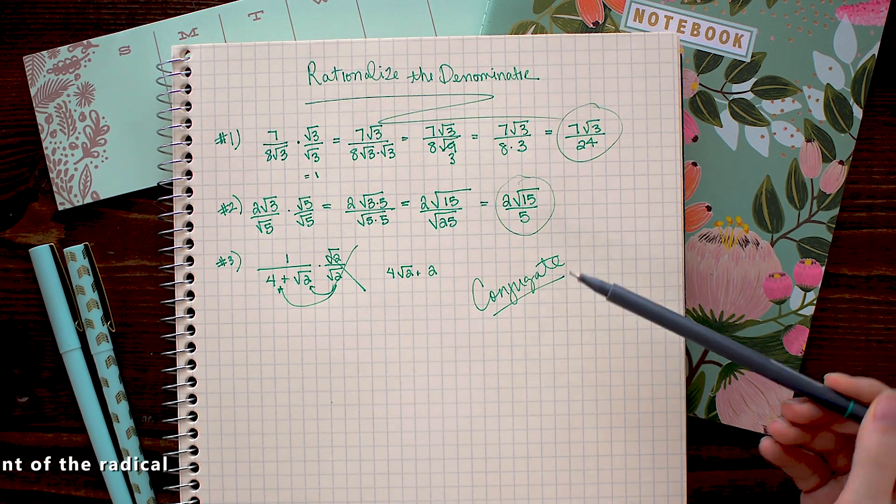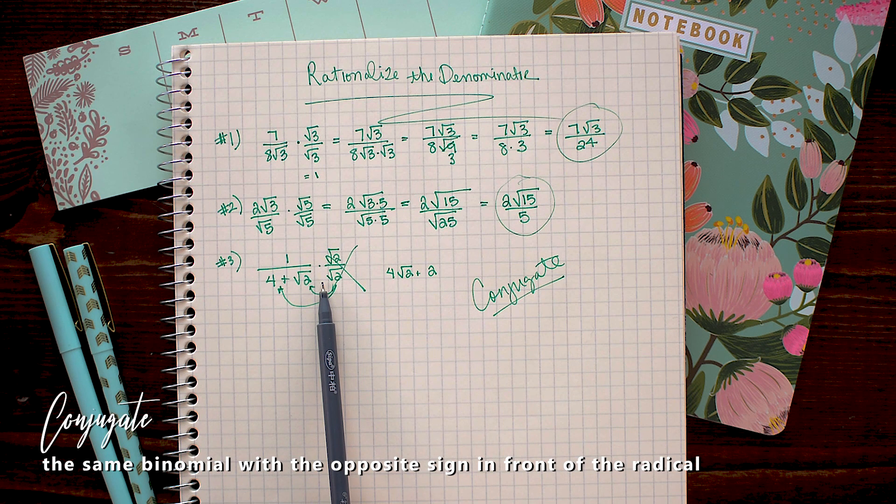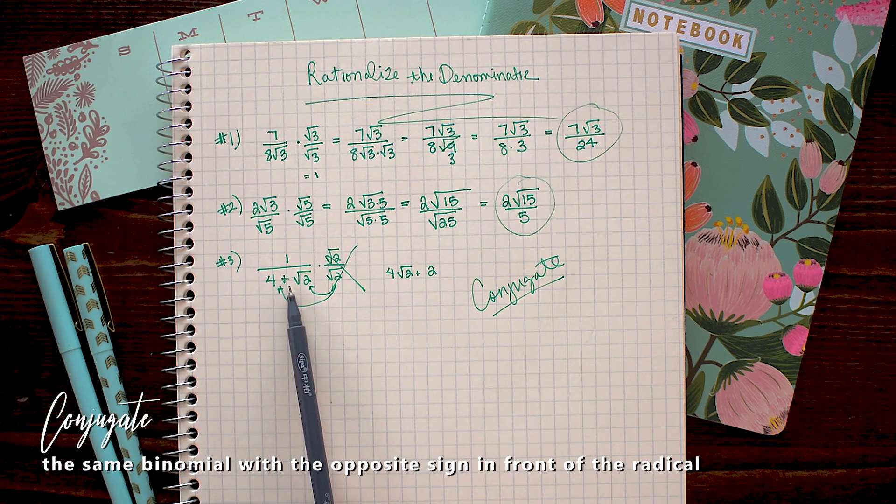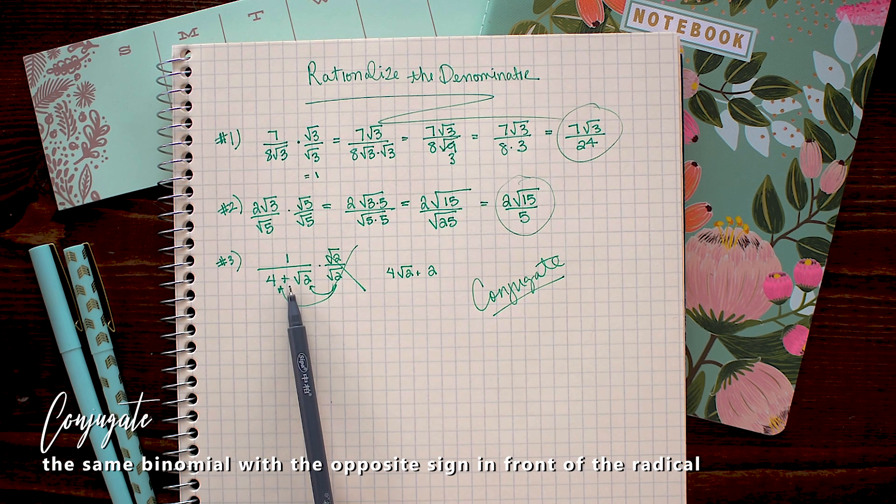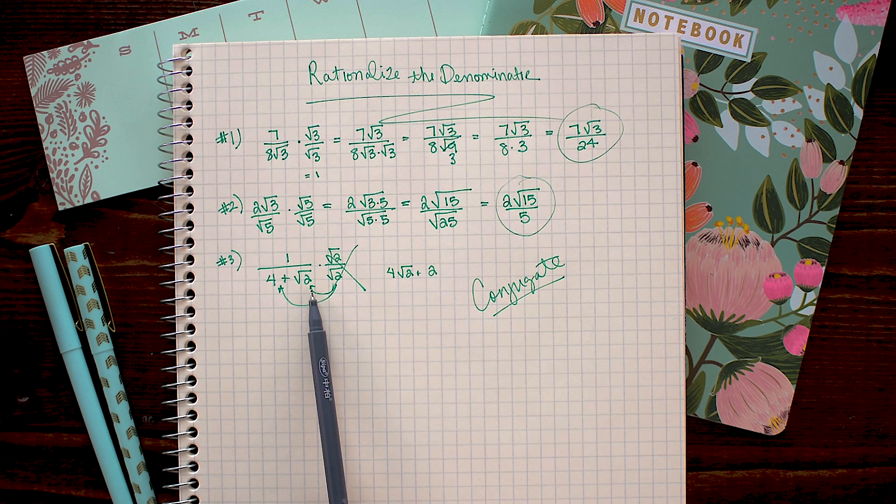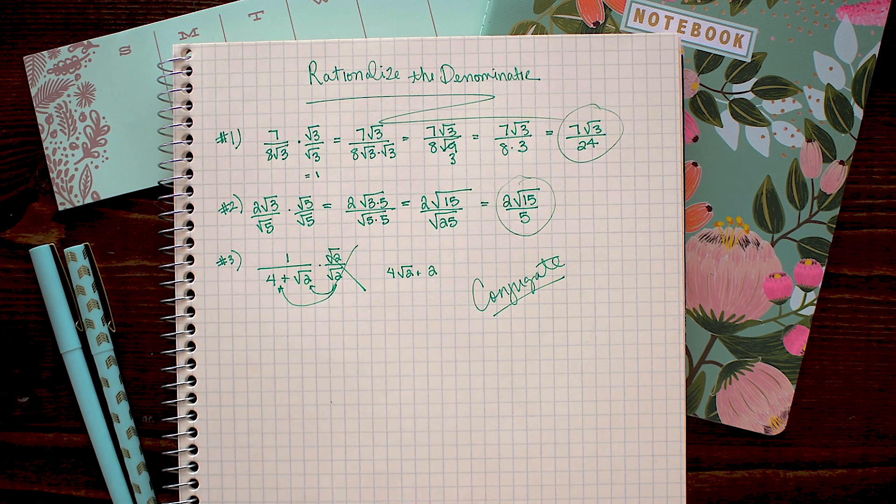The conjugate is simply the same binomial expression with this sign switched. So for this one, I'll change it into a minus sign. If it were a minus sign, I'd switch it to a plus sign. So the conjugate of 4 plus square root 2 is 4 minus square root 2.